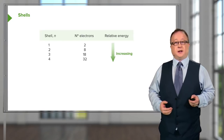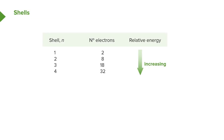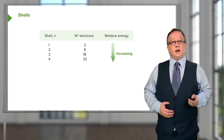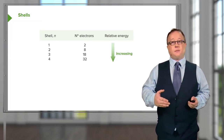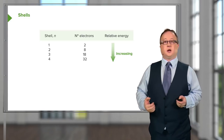From a quantum perspective, each shell can carry a specific number of electrons. Shell one, nearest the nucleus, can carry only two electrons. Shell two can carry eight. Shell three can carry 18, and shell four can carry 32. This is because as we increase the shell number — the principal quantum number — we have a larger number of orbitals available, and each orbital can contain two electrons. The relative energy of these shells increases as we move further away, but this means the relative energy required to remove an electron from a shell actually decreases.